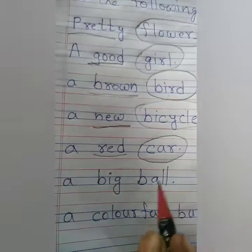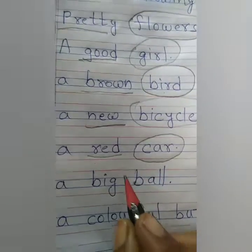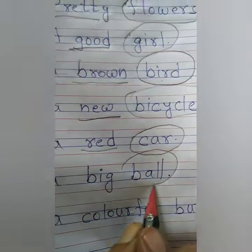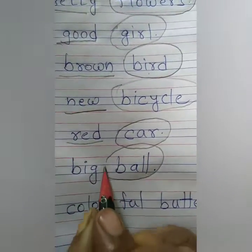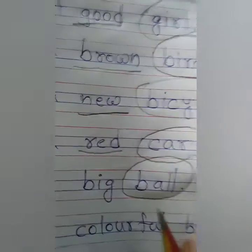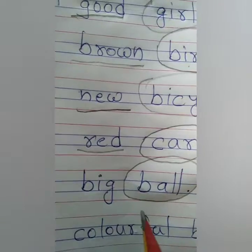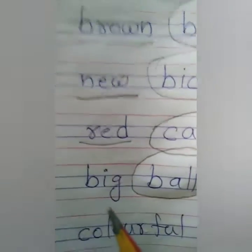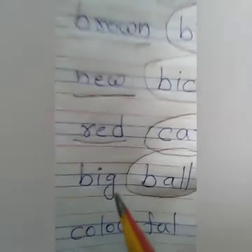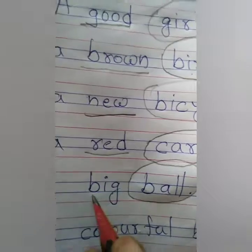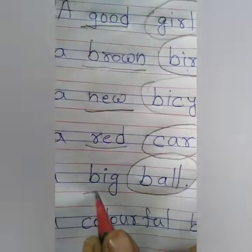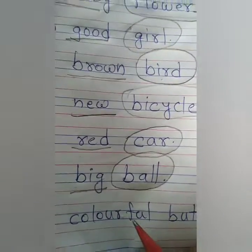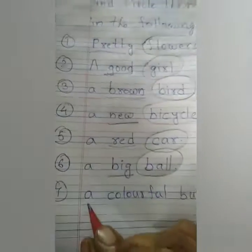A big ball. We are talking about ball, so we will circle 'ball'. And how is the ball — small, old, new, big? It is big. So what is 'big'? It is the describing word, which we have to underline.